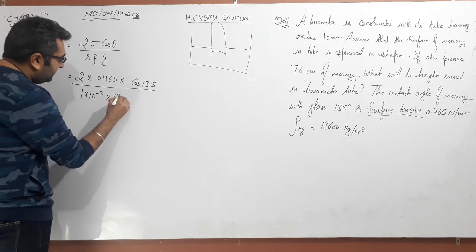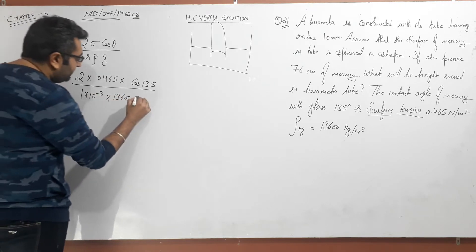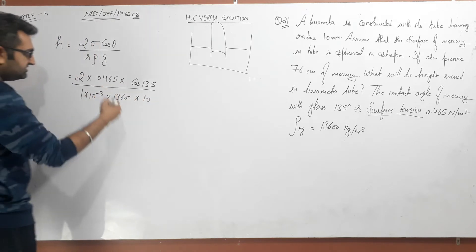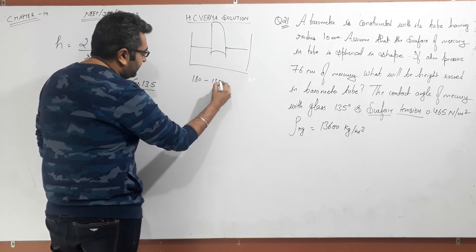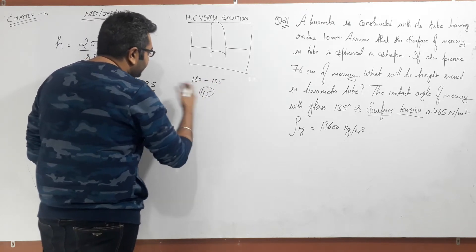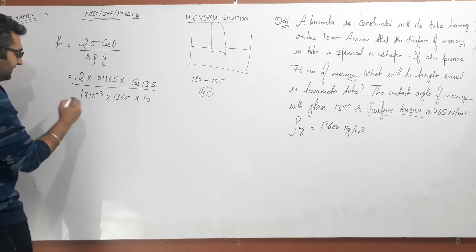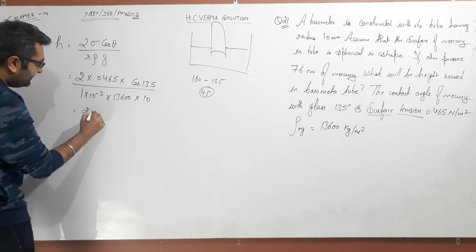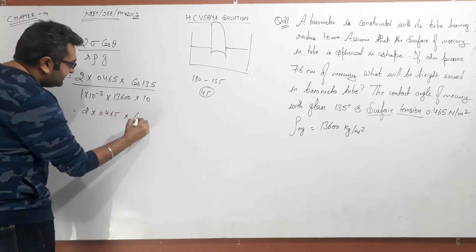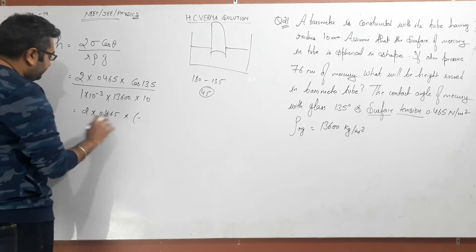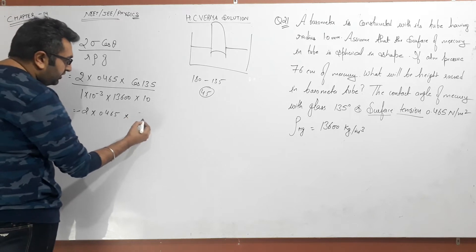The density of mercury is 13,600 kg per meter cube, and g value is 10. Now, cos 135° — subtract 135 from 180, we get 45°, so it's in the second quadrant where cosine is negative. Therefore cos 135° = −cos 45° = −1/√2. We put 0.465 for σ and attach the minus sign along with cos 45°.